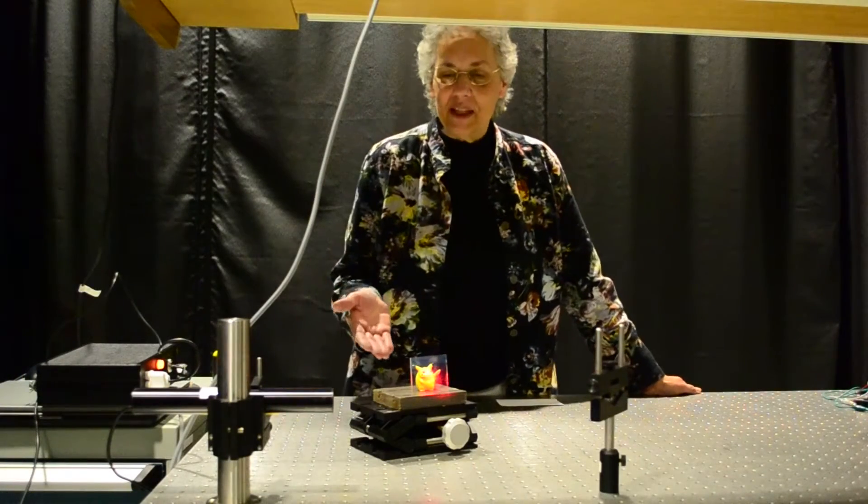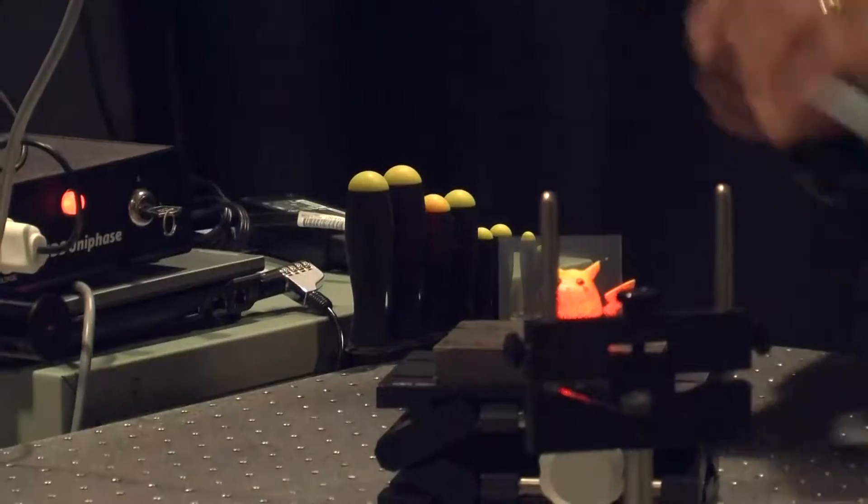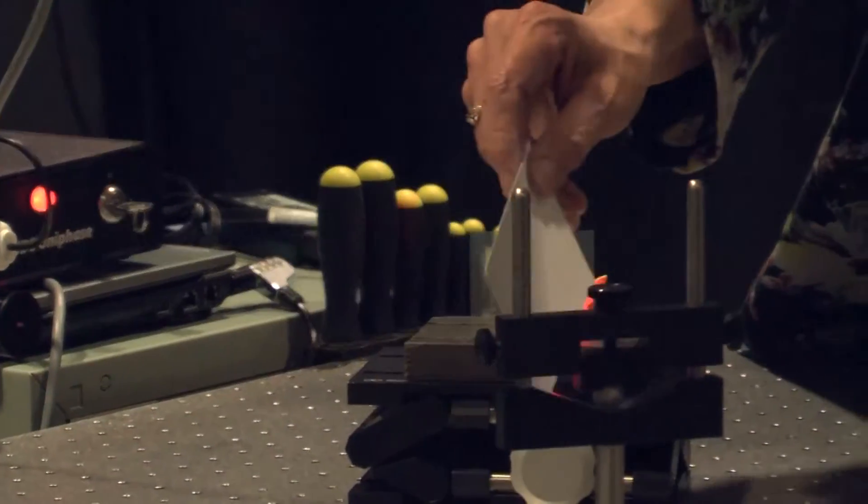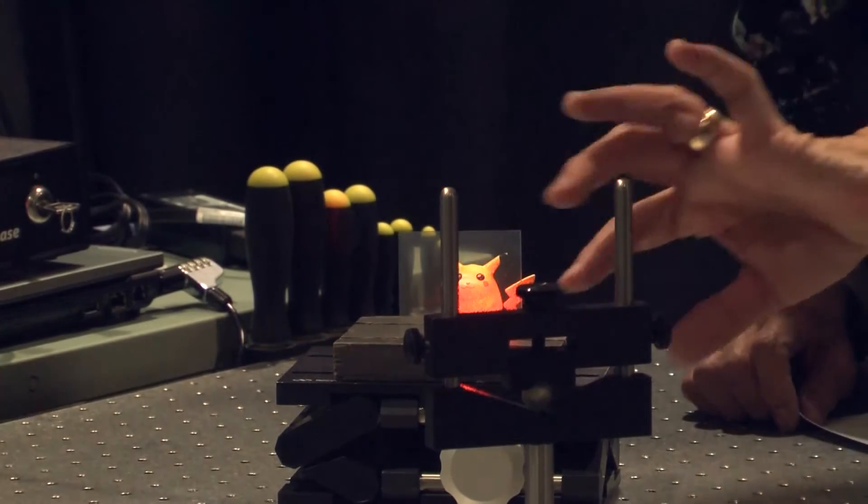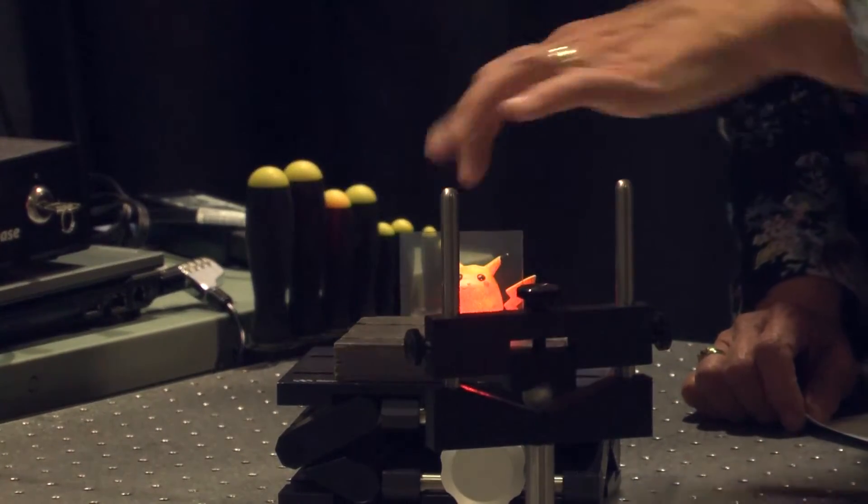This is the setup for a single beam reflection hologram. It's very simple. Light from the laser strikes this short focal length concave mirror. The light spreads and fills the area of the film plate.